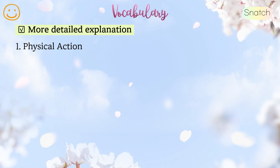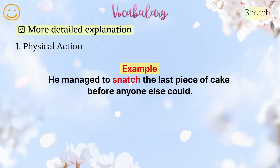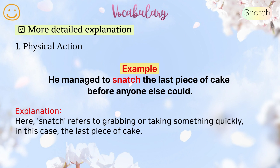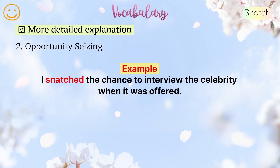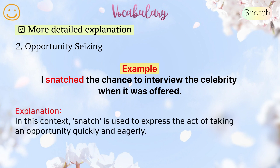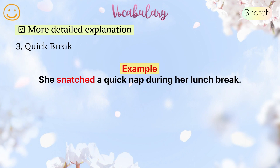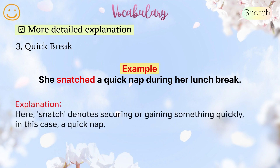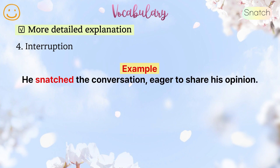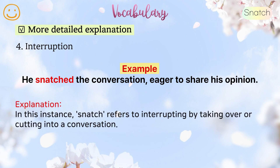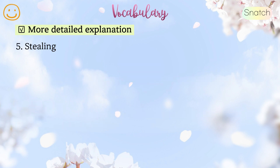More detailed explanation: 1. Physical action — example: He managed to snatch the last piece of cake before anyone else could. Here, snatch refers to grabbing or taking something quickly. 2. Opportunity seizing — example: I snatched the chance to interview the celebrity when it was offered. Here, snatch is used to express the act of taking an opportunity quickly and eagerly. 3. Quick break — example: She snatched a quick nap during her lunch break. Here, snatch denotes securing or gaining something quickly. 4. Interruption — example: He snatched the conversation, eager to share his opinion. Here, snatch refers to interrupting by taking over or cutting into a conversation. 5. Stealing — snatch is used to denote the act of taking something suddenly and without permission, in this case, a purse.